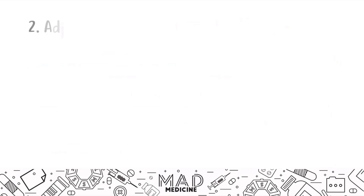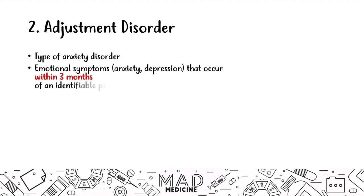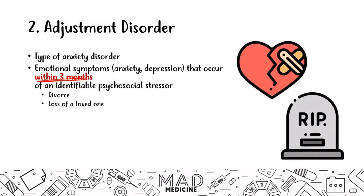Moving on to the next anxiety disorder: adjustment disorder. This is a type of anxiety disorder where patients have emotional symptoms — anxiety and depression — that occur within three months of an identifiable psychosocial stressor, something you can definitely attribute the disorder to. This could be something like a divorce or a loss of a loved one. The way I like to think about it: they are having difficulty adjusting to their new situation — whether they lost their spouse or went through a divorce. Adjustment disorders might also present along with feelings of grief, especially if they've lost someone. The three-month time frame is very important.